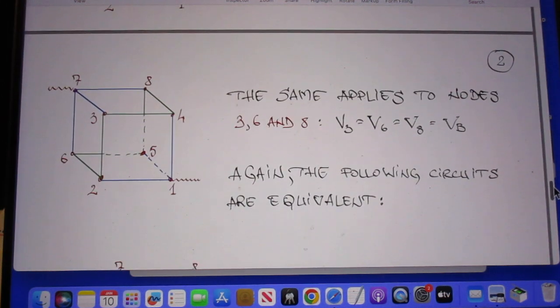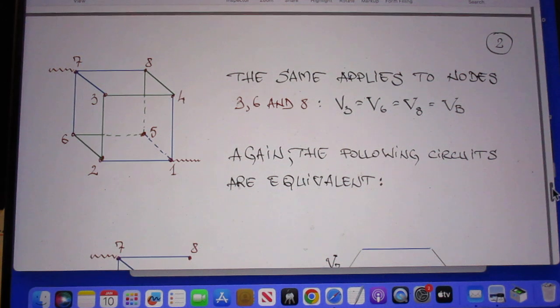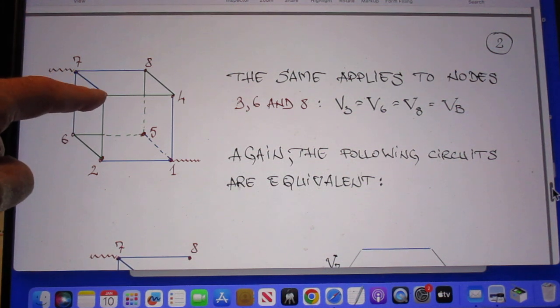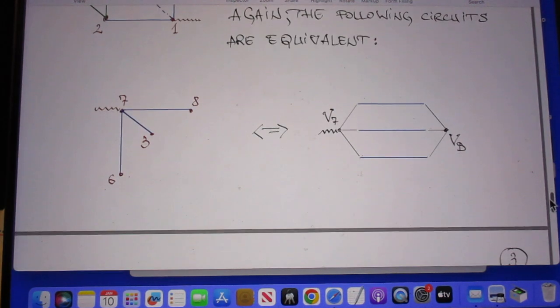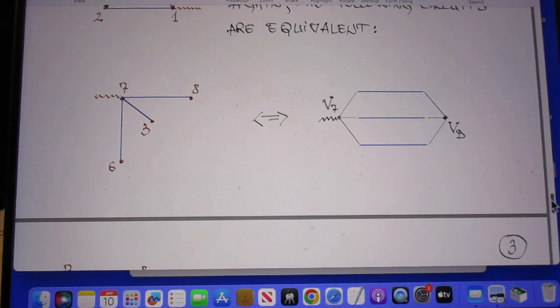And now he applies the same to the node three, six, and eight. They also must have the same potential which he calls the V of B. So three, six, and eight must have the same potential and he calls that V of B. And so he replaces now that by three resistors.